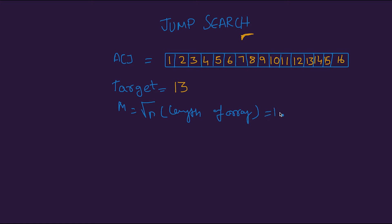In this case n is 16, so m = √16 = 4. We start by looking at index 0, then jump to index 4 (value 5), then to index 8 (value 9). We add one more jump to index 12, then go to index 13. As long as the target is greater than the value at the current index, we keep jumping by m.